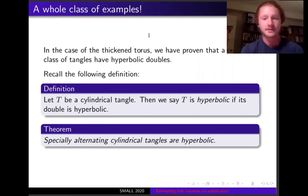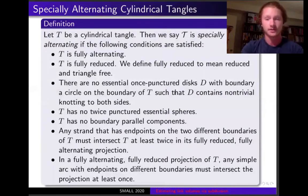Hello, I'm Alex. I'm a current student at Williams College and I want to return to the case of the thickened torus and talk about a whole class of examples. So, these theorems that we talked about are a really cool way to cut up a link and look at the properties of the whole link based on its constituent parts. The only drawback is that these constituent parts have to be hyperbolic in order for our theorems to apply. So, we've proven that a whole class of examples are hyperbolic. So, in the thickened torus, we're going to talk about tangles that are in cylinders, which you can imagine are like half of a torus. And recall, as Natalie defined, that a tangle is hyperbolic if its double is hyperbolic. So, we've proved that a whole class of these are hyperbolic. And we call these specially alternating cylindrical tangles.